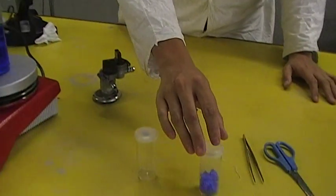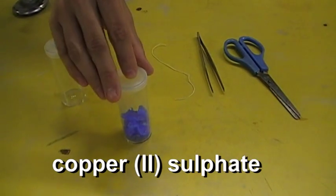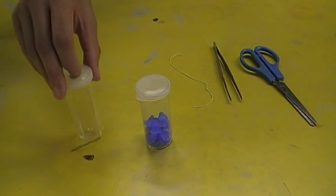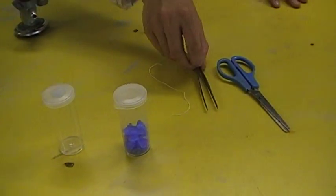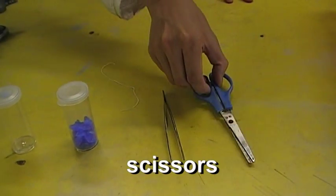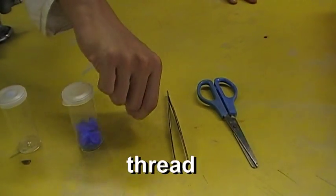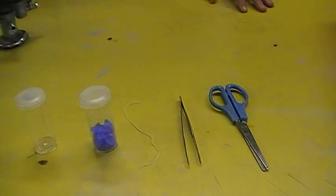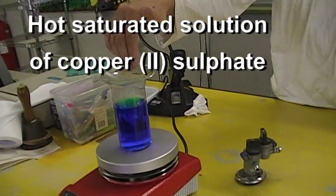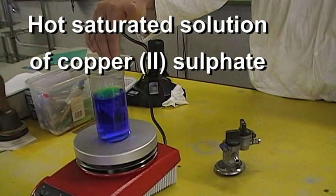There is a crystal of copper sulfate, a plastic bottle, a funnel stand, scissors, a thread, and also a hot saturated solution of copper sulfate.